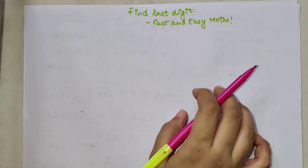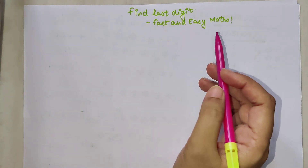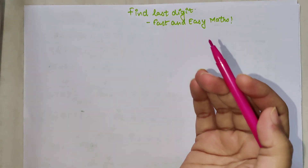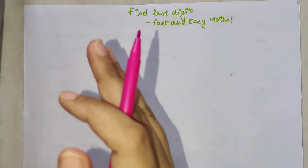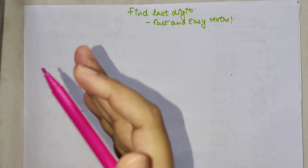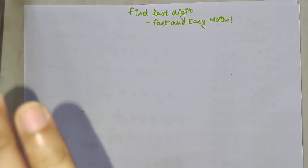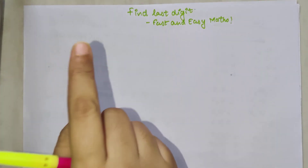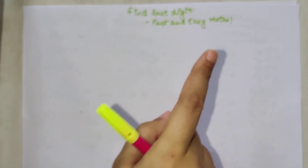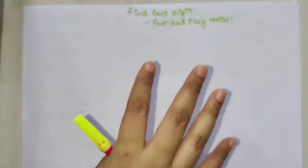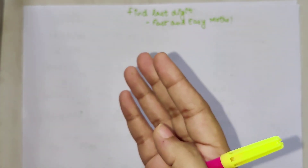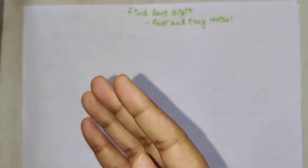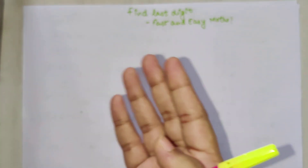Welcome everyone to my channel, Fast and Easy Math, which is dedicated to giving you tips and tricks related to mathematics. Today we are going to do part three of finding the last digit of any number that has a four or nine at the units place.